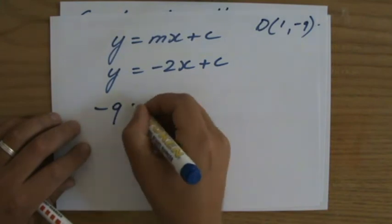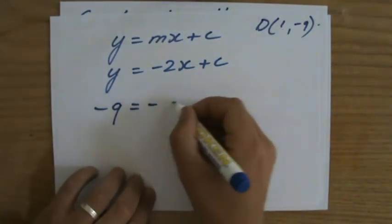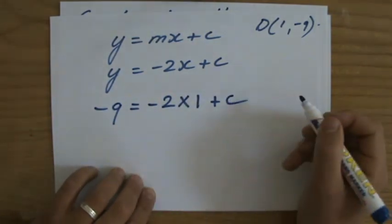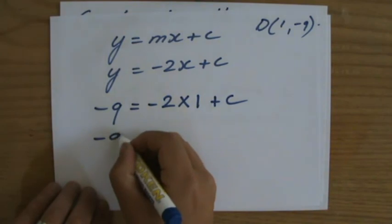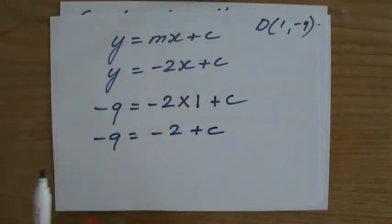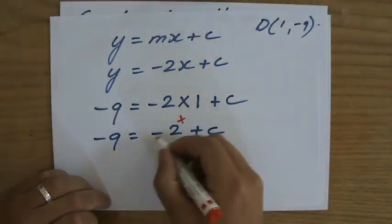Sorry about that. -9 equals, and then x is 1, so -2 times 1 plus c. -9 = -2 + c. That's a one-step equation.